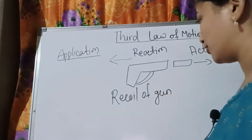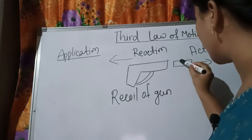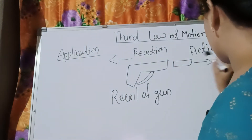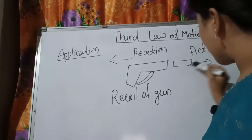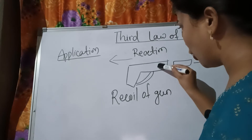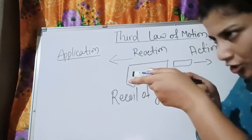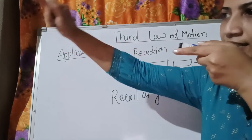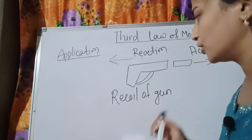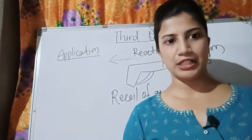The fourth example is the recoil of a gun. When we shoot a gun, the bullet moves forward — that is the action. In reaction, the gun moves backward. This backward movement of the gun is called the recoil of the gun. So when the bullet moves forward as the action, the gun's recoil is the reaction. This is all about the applications of Newton's third law of motion.